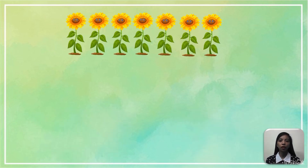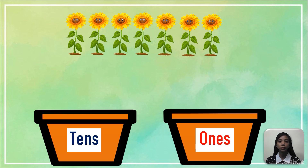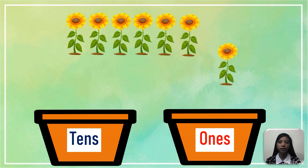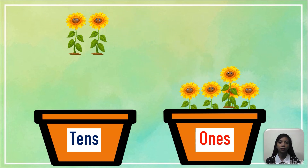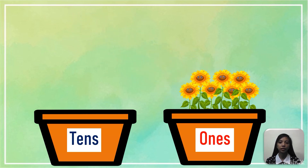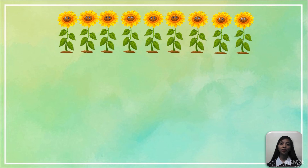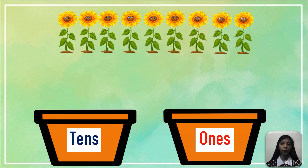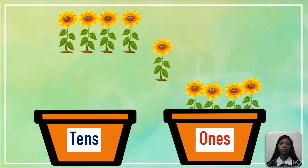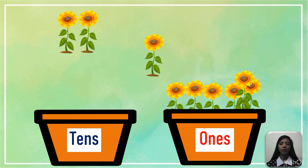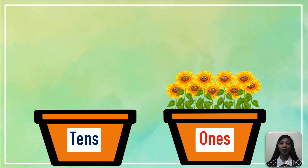Here we have a group of sunflowers. We will put the flowers in their own places. So let's start with the 1s place: 1, 2, 3, 4, 5, 6, 7. So we have 7 in the 1s place. Then continuing: 1, 2, 3, 4, 5, 6, 7, 8, and 9. So there are 9 sunflowers in 1s place.